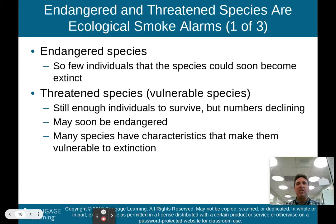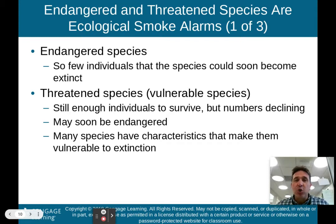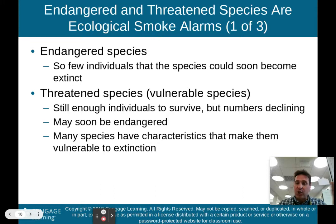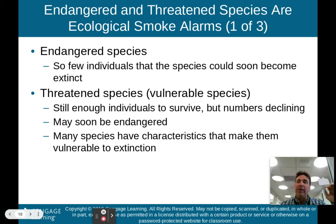What are endangered and threatened species? They are ecological smoke alarms. An endangered species is one where there are so few individuals that the species could soon become extinct. A threatened or vulnerable species still has enough individuals to survive, but the numbers are declining and they may soon become endangered. Many species have characteristics that make them vulnerable to extinction — we'll look at those in just a minute.